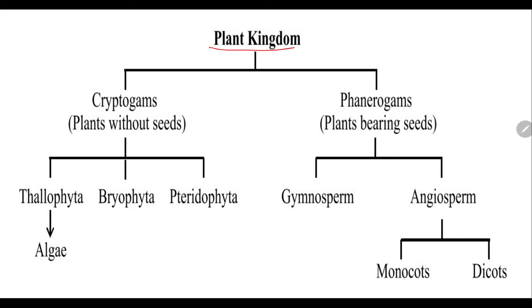This plant kingdom is divided into the sub-kingdoms, that is cryptogames and phanerogames. Cryptogames are the plants which do not produce seeds, while phanerogames are plants which produce seeds.